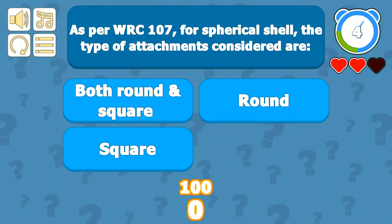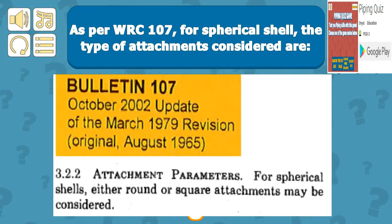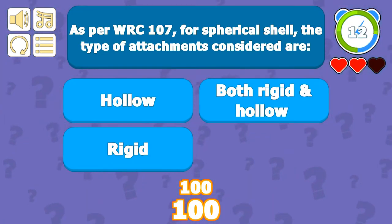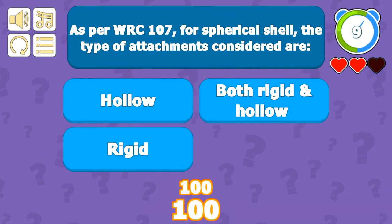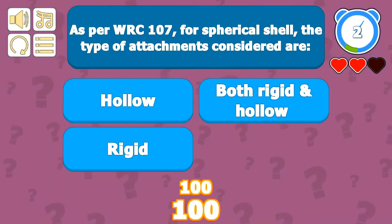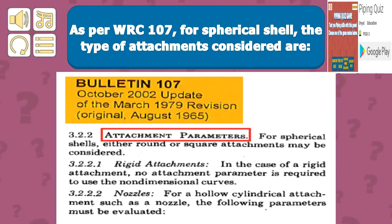Both round and square type attachments are considered in WRC 107 stress computation for spherical shells, as provided in para 3.2.2 as an attachment parameter. For spherical shells, either round or square attachments may be considered as per WRC 107. The types of attachment considered are hollow, rigid, or both — rigid and hollow — for evaluation, covered in the attachment parameters for spherical shells.